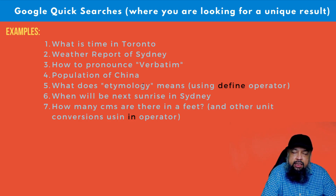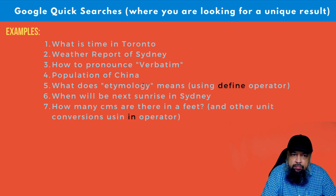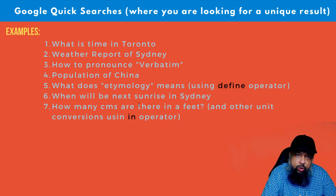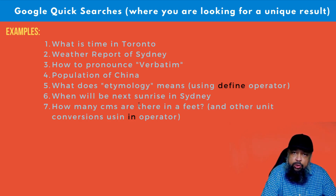Similarly, when is the next sunrise in any location, just type 'sunrise' and the location. In order to convert any units from one unit to another, it's very simple — here I'm giving the example of how many centimeters are in a foot. So let's see how we can do these queries within a few seconds.